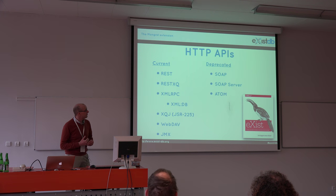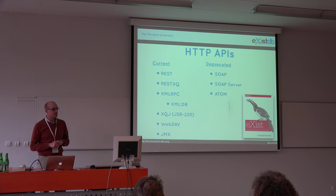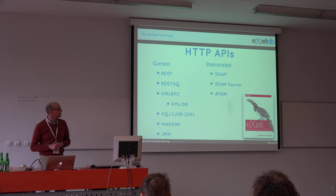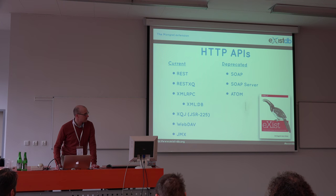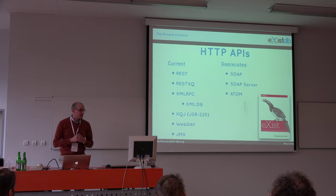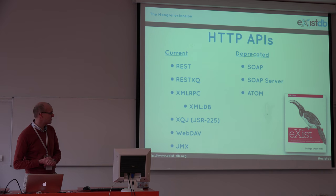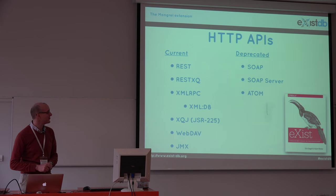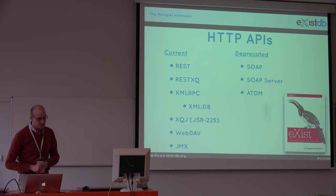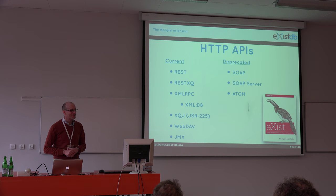These are the current APIs which are most important. The REST interface is basically used for everything. Atom added the REST XQuery interface, which is a very nice way of using annotations to couple your external URLs with XQuery code. We have the XMLRPC interface, which the Java client depends on heavily via the XMLDB classes. XQJ is basically XQuery for Java — it was a hype a few years ago but I'm not sure whether it's really being used in the field. And we have the WebDAV interface for file transfer and an HTTP-based JMX interface to do diagnosis and help find deadlocks.